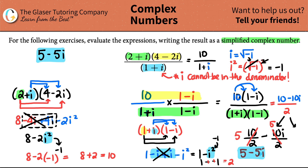A lot of work for this one, but we just go through it step by step and check ourselves so we don't make any mistakes. Math is just a puzzle — take it step by step, work through the formulas, and arrive at an answer. Our final answer is 5 − 5i. Hopefully this helped — leave a comment, like, and subscribe, and I'll see you guys in the next lesson!